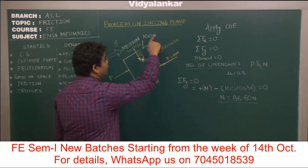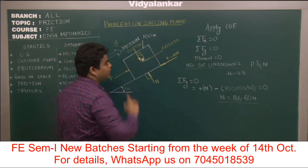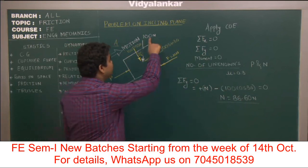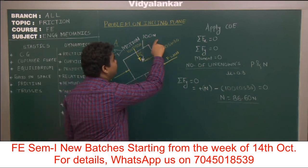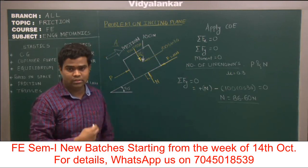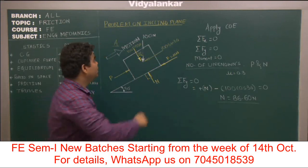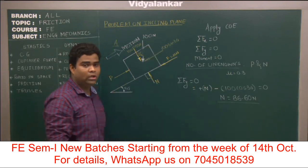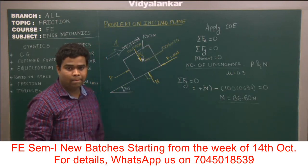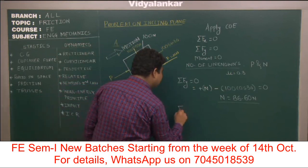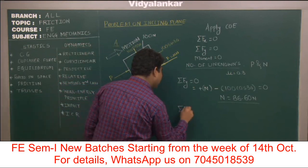If the value is given in kilograms, for example 100 kg, we simply multiply by 9.81 to convert kilograms into Newtons. But here it is already given in Newtons. Now let's apply the second condition of equilibrium, summation Fx equal to zero.